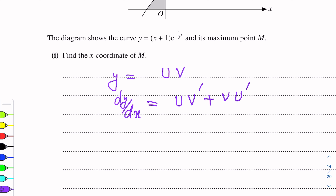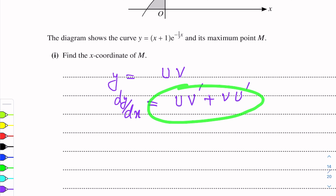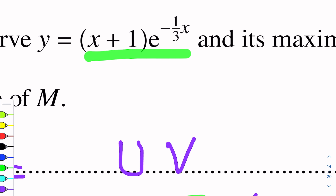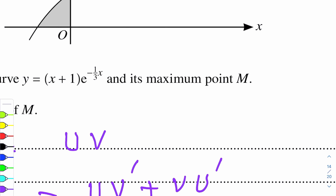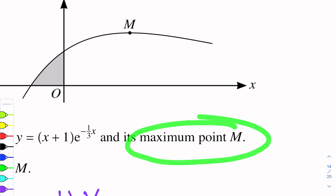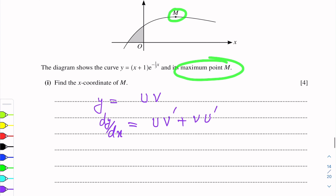Here 'dash' means differentiation. u' means du/dx and v' means dv/dx. So this formula will be applied here. We will find dy/dx first, then put it equal to 0, because the gradient value is 0 at the maximum point. From there x will be found.